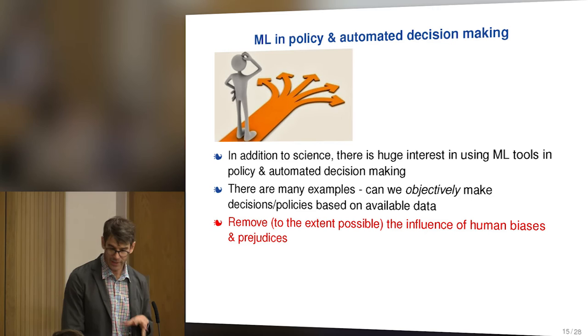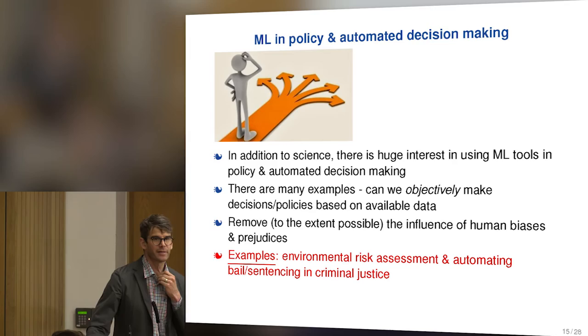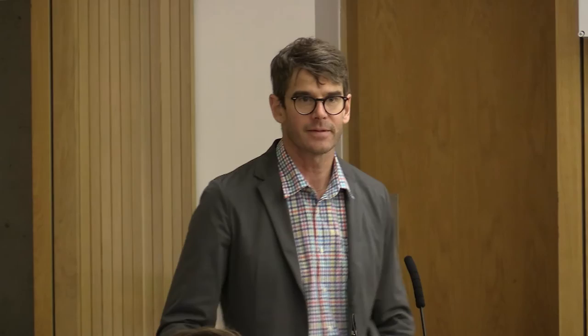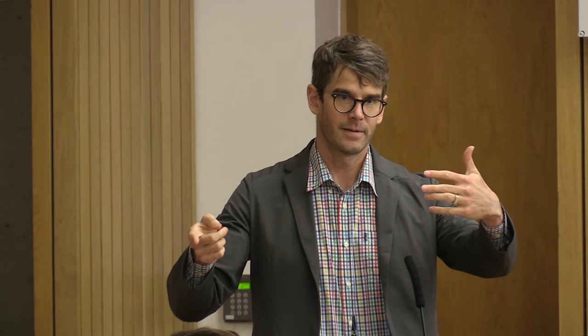Examples include environmental risk assessment, automated bail or sentencing in criminal justice. This is really personal to me — my older son had drug problems, which is an epidemic now. I'm an upper-middle-class Caucasian in the US. We go into the courtroom and a lot of the other people are low-income African Americans. If my son were a low-income African American, he would be in prison. But I could pay for a high-priced lawyer. The system is biased, and he got off completely. I'd like to be able to develop tools that get rid of that bias automatically. It's ridiculous how biased the system is.